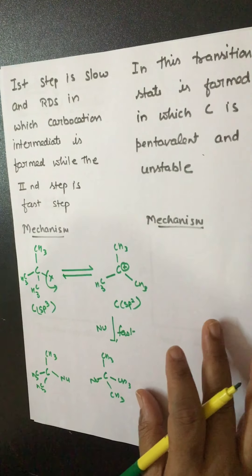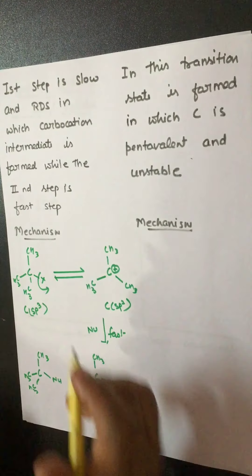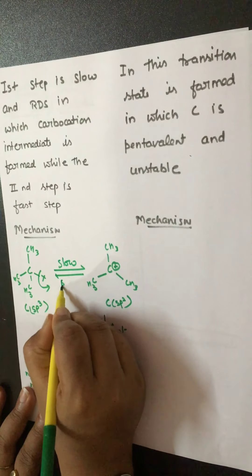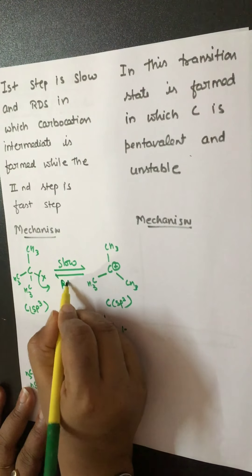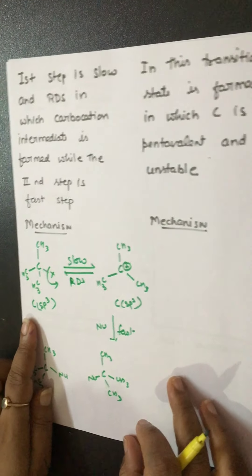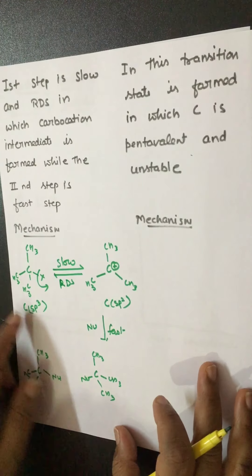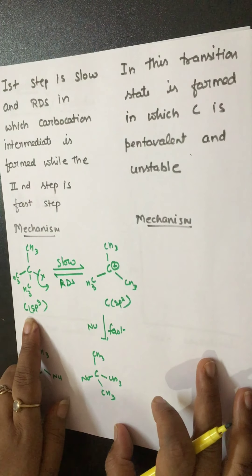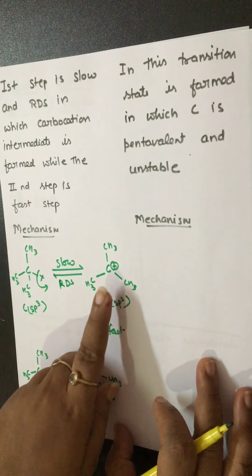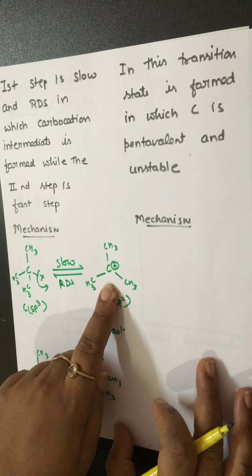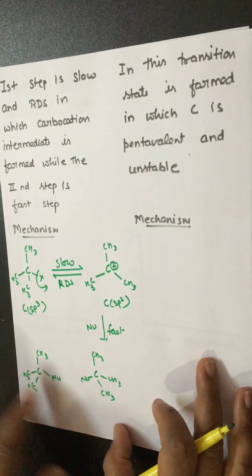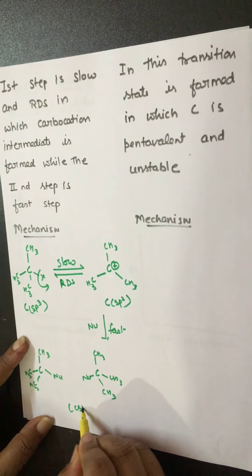That was the SN1 type of mechanism. The first step is slow — RDS, rate determining step — and the second step is fast. In the first step, alkyl halide (substrate) carbon is sp3 hybridized; in the intermediate, carbon is sp2 hybridized; and in the final product, carbon is again sp3 hybridized.